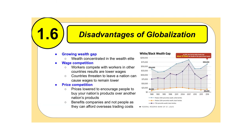Now we're going to take a look at the disadvantages of globalization. The first one is a growing wealth gap. Wealth is concentrated in the wealthy elite, and that creates a wealth gap. When you think about someone like Jeff Bezos and how he makes thousands of dollars a minute, that's just continuing this wealth gap.